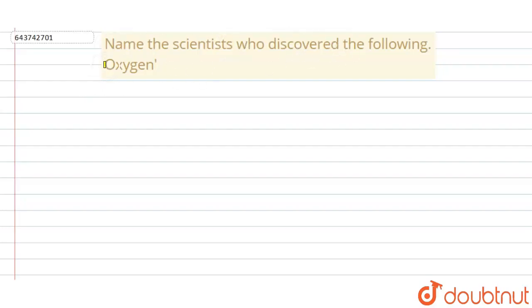...the following. The atom given is oxygen. So, which was the scientist who discovered oxygen? The scientist's name was Joseph Priestley. Joseph Priestley, he was a scientist who lived between 1733 to 1804.